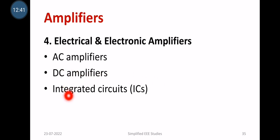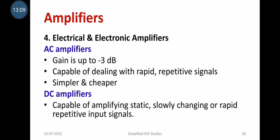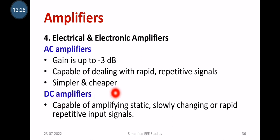There are three sub-classifications of electrical and electronic amplifiers: AC amplifiers, DC amplifiers, and integrated circuits. An integrated circuit is a combination of different elements embedded in a small chip; an example is the LM741 op-amp IC (operational amplifier IC). The gain of AC amplifiers is up to −3 dB; they are capable of dealing with rapid and repetitive signals and are simple and cheap. DC amplifiers are capable of amplifying static and slowly changing signals; compared to AC amplifiers, DC amplifiers are more expensive.